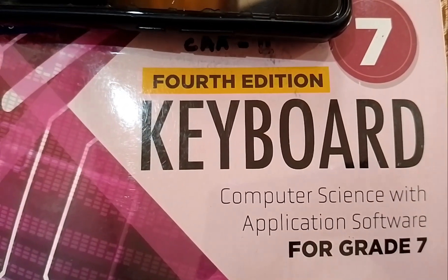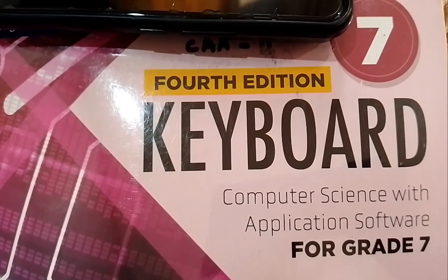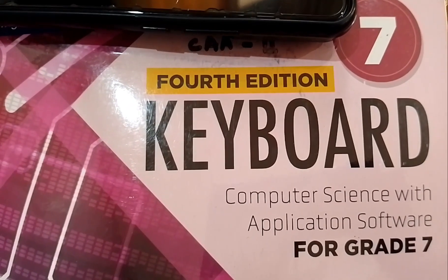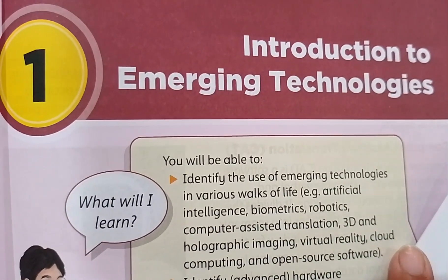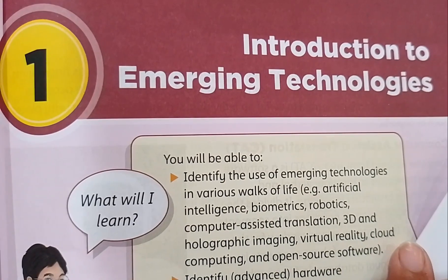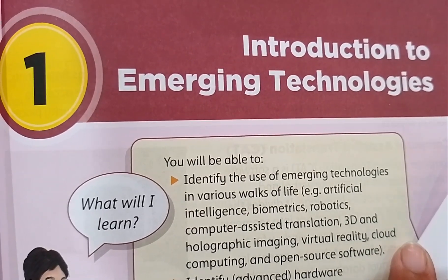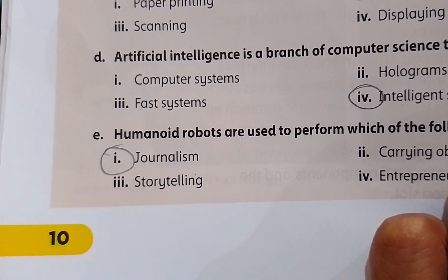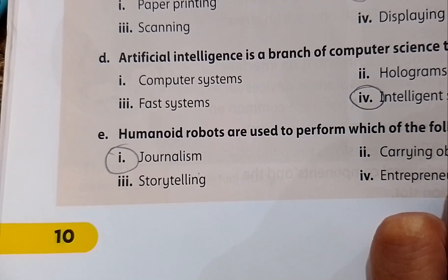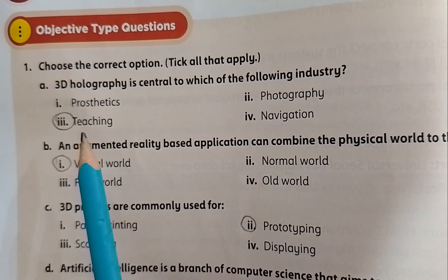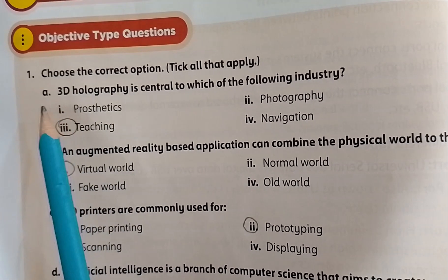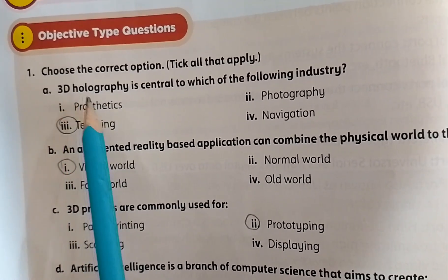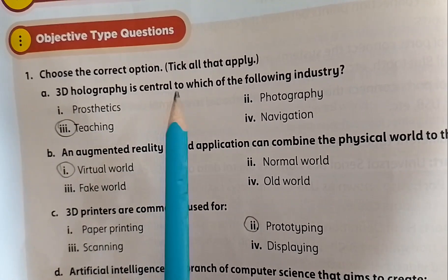Keyboard 4th Edition for Grade 7, Unit 1: Introduction to Emerging Technologies. Page 10 — choose the correct option. Question: 3D Holography is central to which of the following industries?